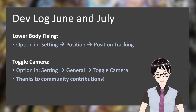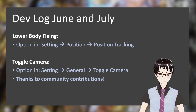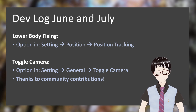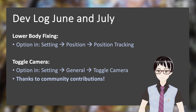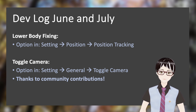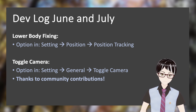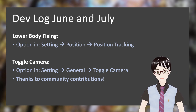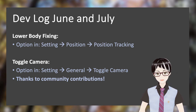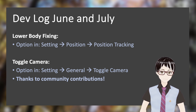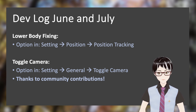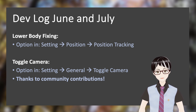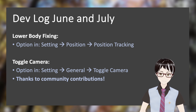The second feature is toggle camera. Inside settings, under general, there is a toggle camera button. It allows you to temporarily disable the video source. If you disable the video source, your model will not move anymore. This is basically a way to pause your video recording or pause the camera.